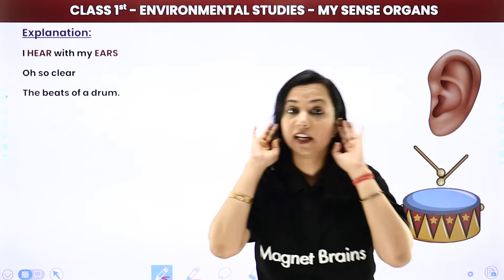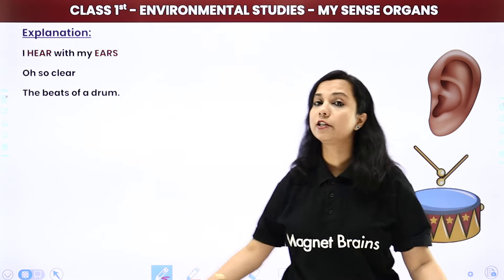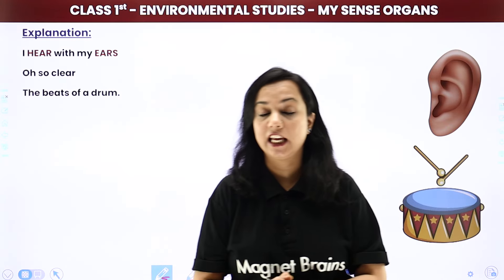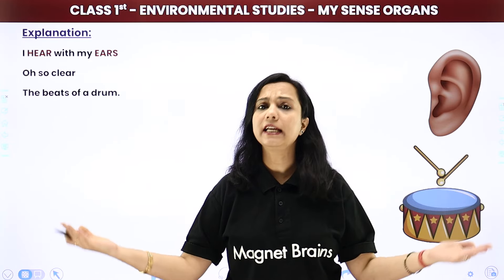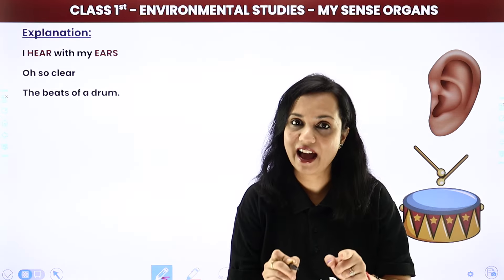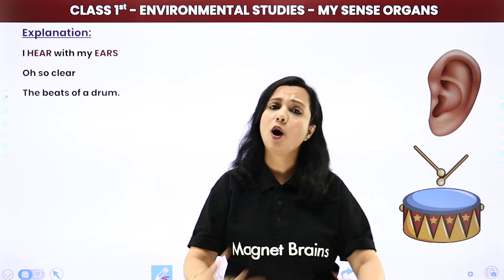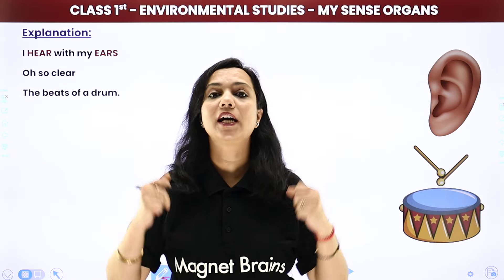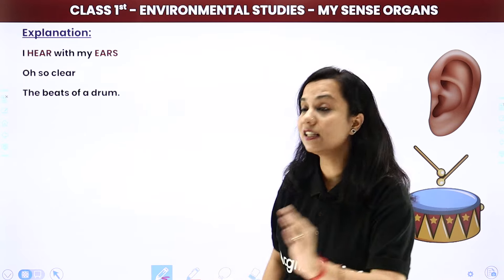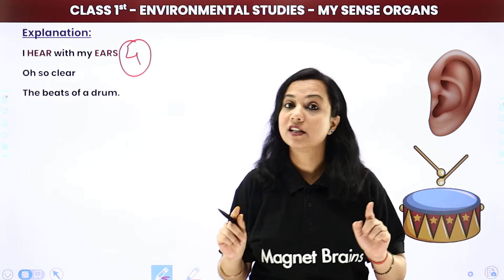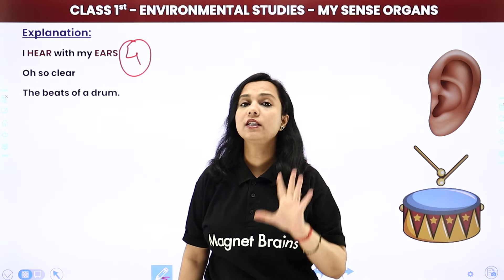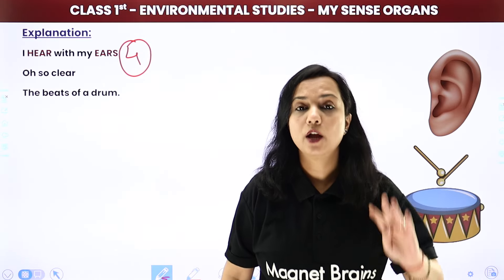I hear with my ears — oh so clear, the beats of a drum! Kabhi shadi ke dhol nagare bajte hain, ya zore zore se music bajta hai, aur hum kaise dance karne lagte hain! Lekin children, socho kiya agar aap ye music sun hi nahi paate? Toh kya aap itni masti kar paate? No, you wouldn't have been able to do any type of fun. But because you have got two ears, that is why you can hear all types of sounds. Jo kaan hote hain, wo aapko sunne mein help karte hain. Aap bahut saari voices sun sakte hain. Aur is liye ye bhi hai sense organ — sense organ number four. Skin, eyes, nose aur ears children.